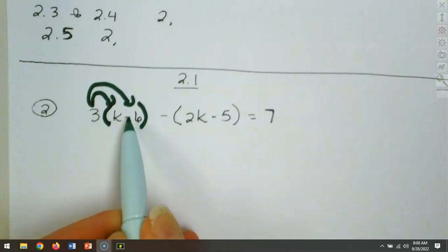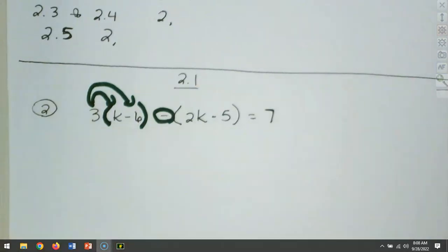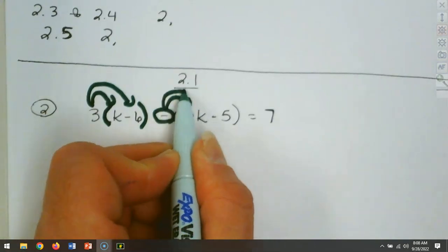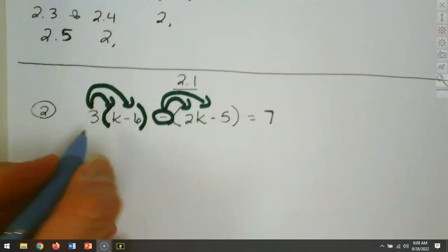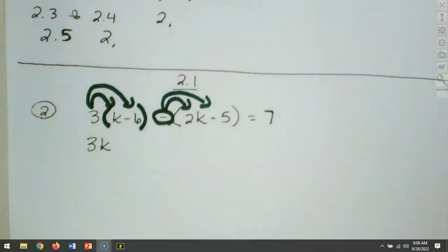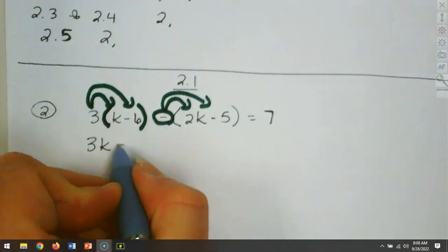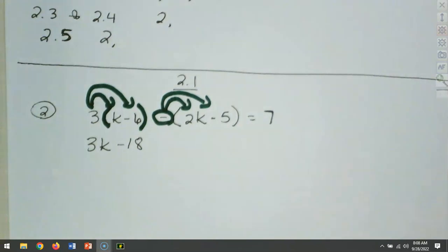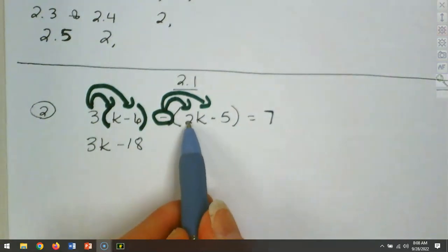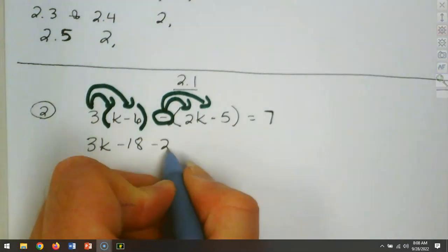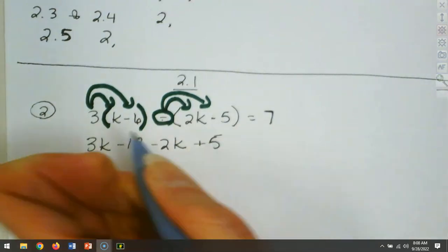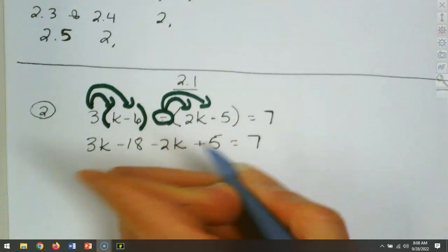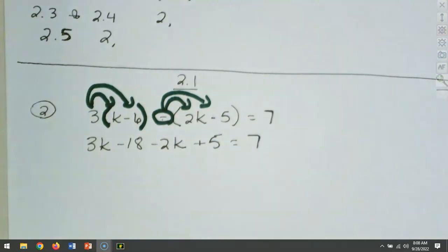The next term has a negative in front, and when I distribute that negative through, that is going to change my signs. So we've got 3 times k, which is 3k, and 3 times negative 6, which is negative 18. When I distribute this negative through, that gives a minus 2k. Negative times negative makes it a positive 5. And that equals 7.